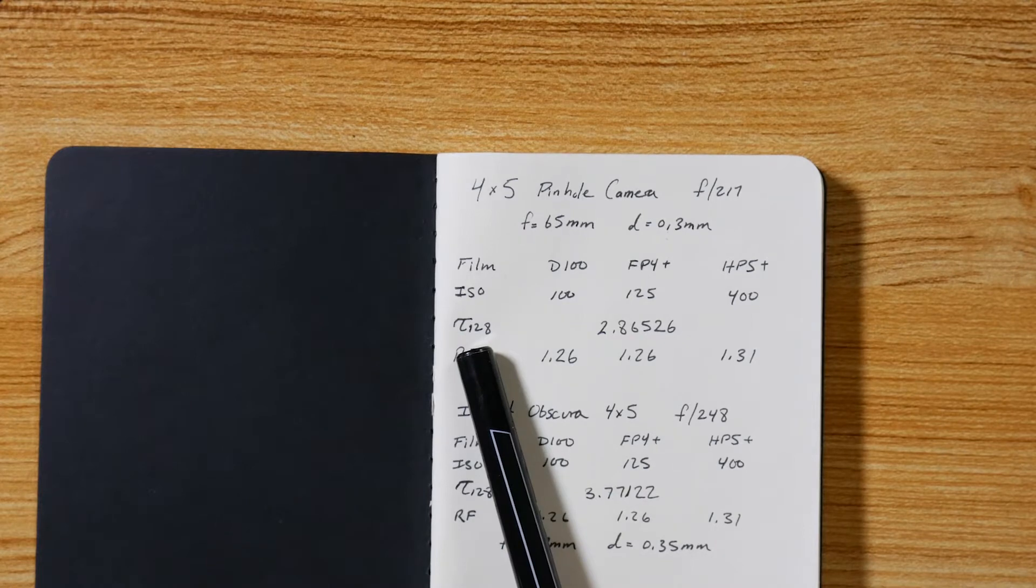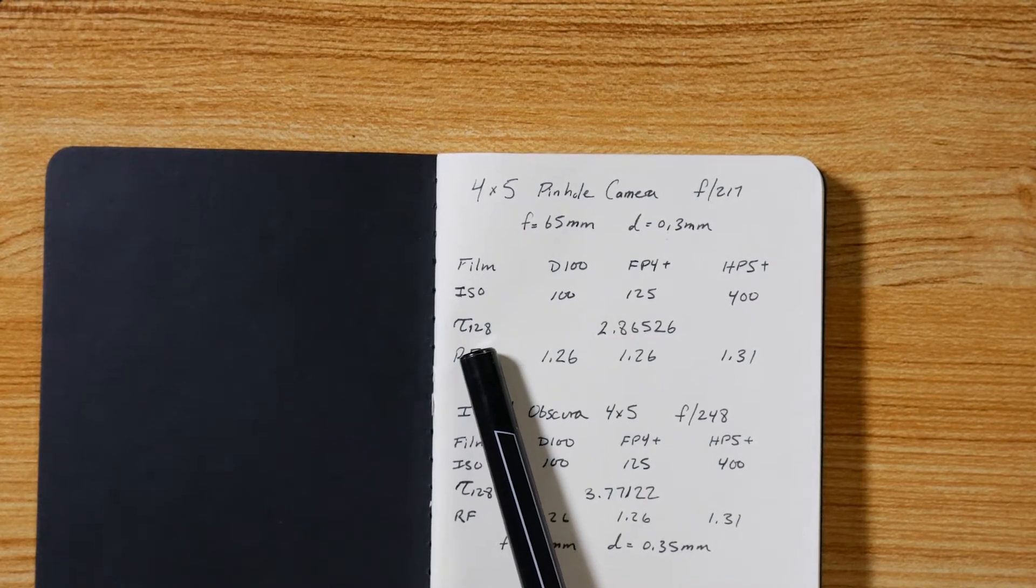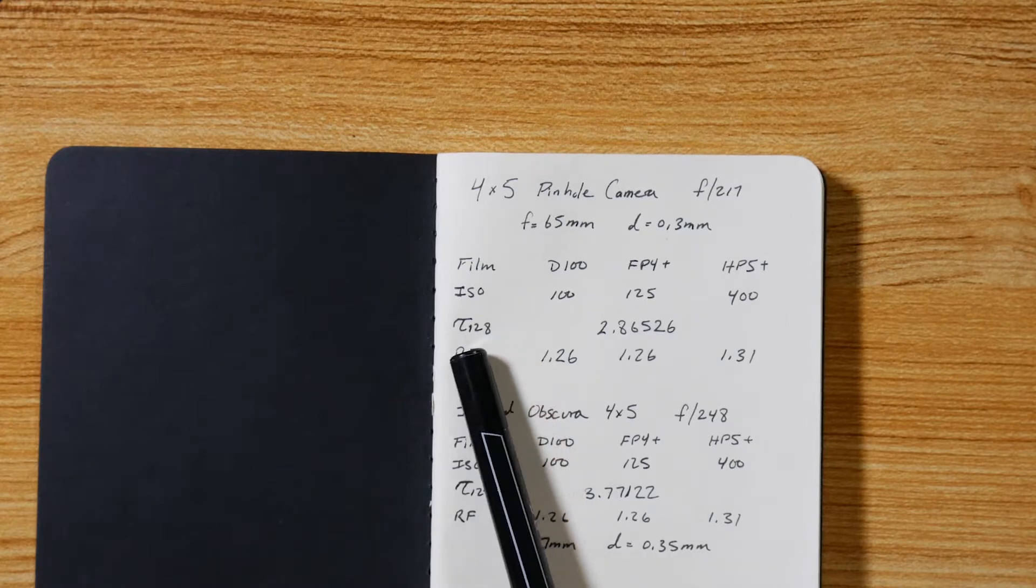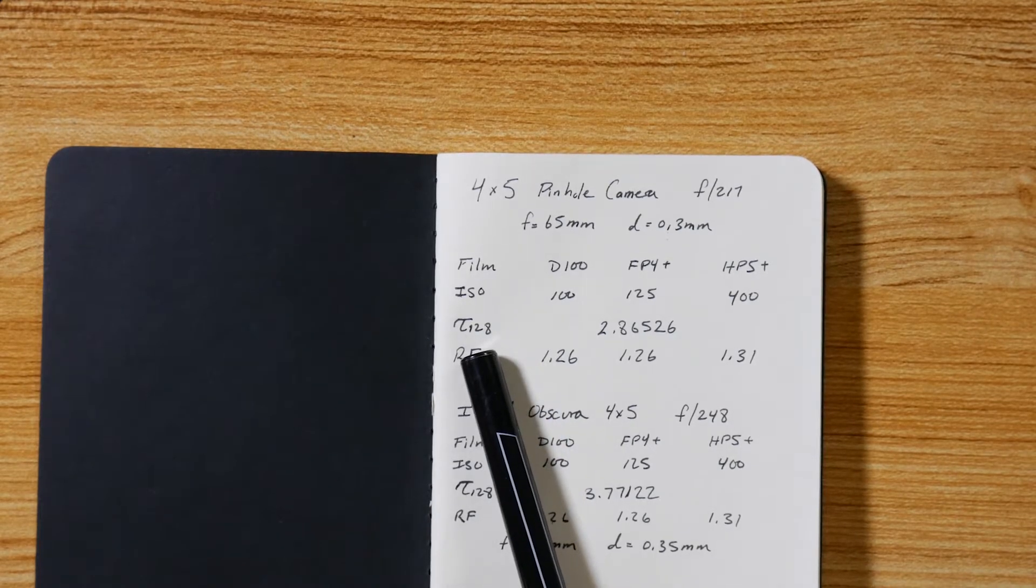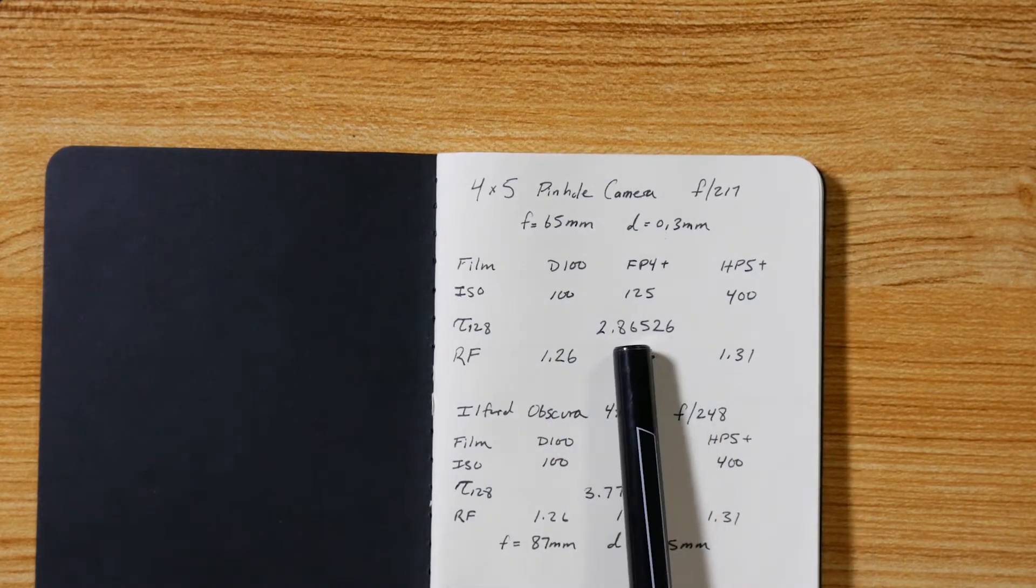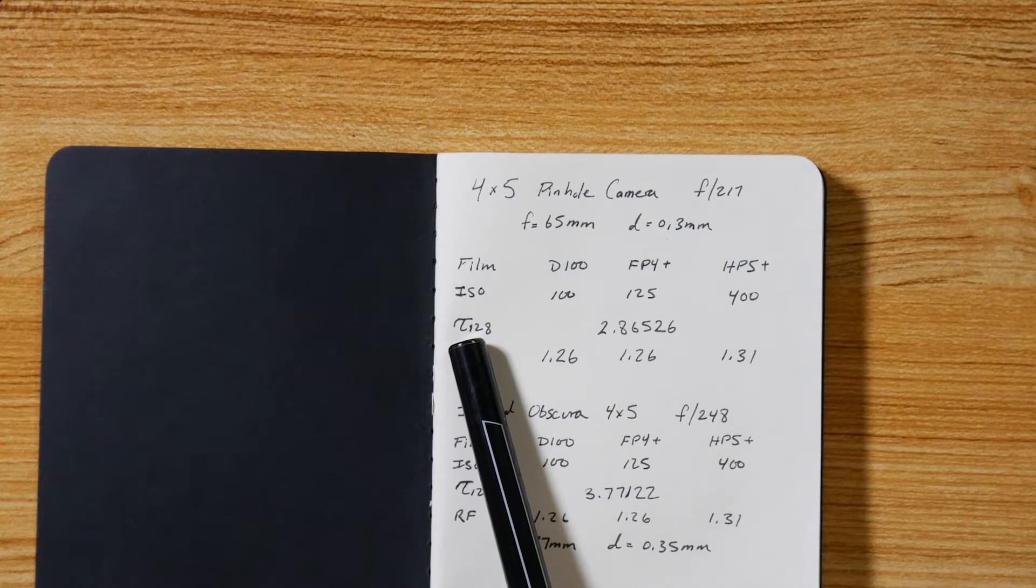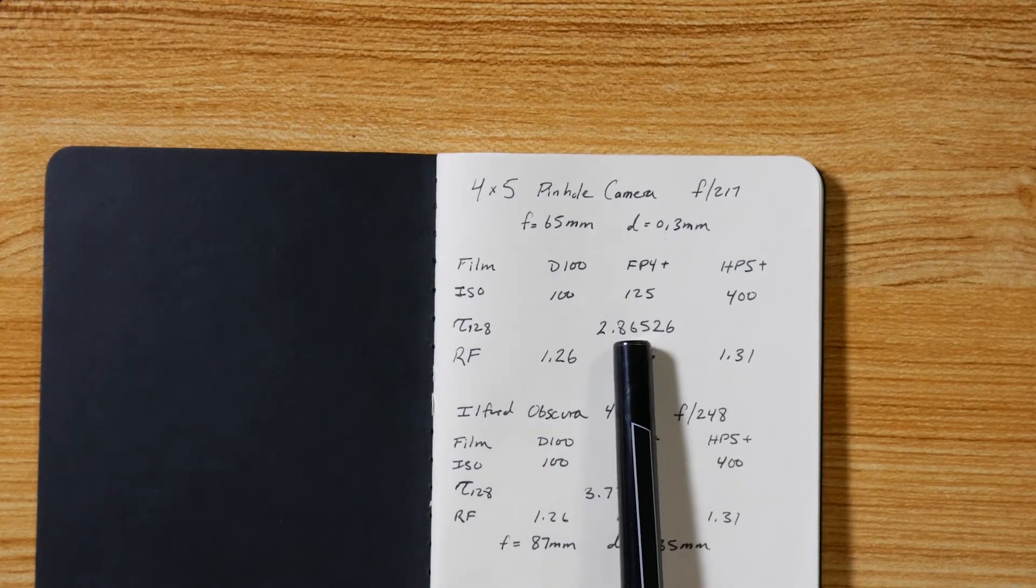Then I have this factor I denote tau, with a subscript of 128, which means that I'm going to set my meter to read for what it says for f/128. I have this factor 2.86. How I get this factor: I take the f-stop of my camera, divide it by 128, square that number, and that gives me this.